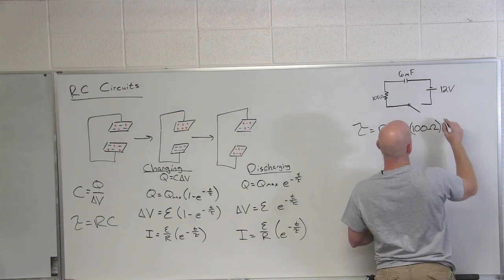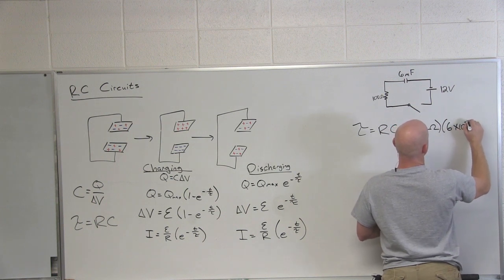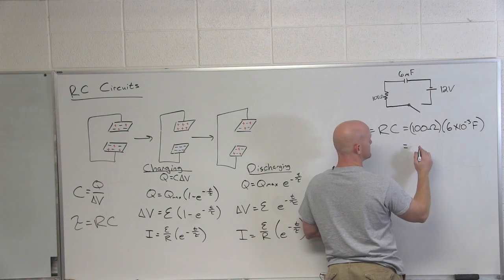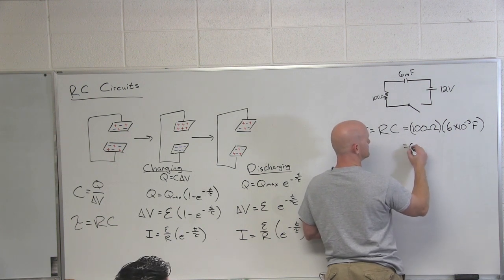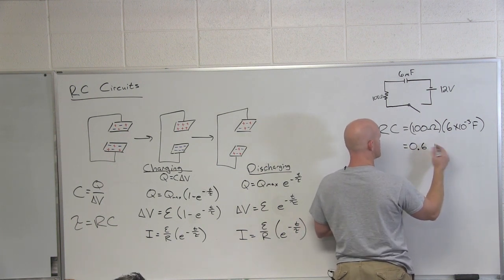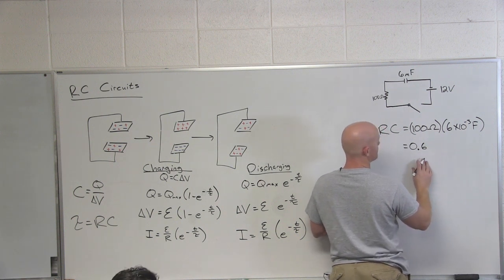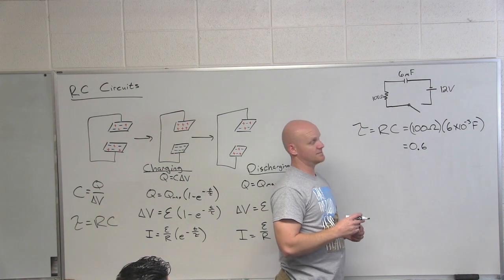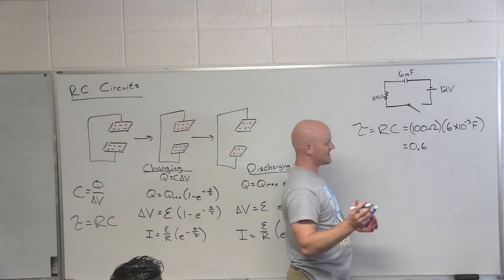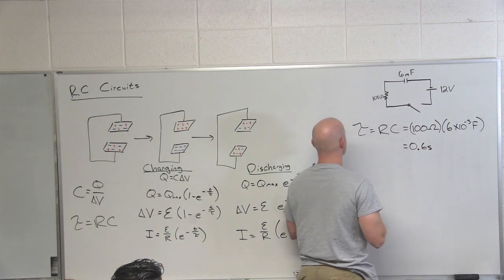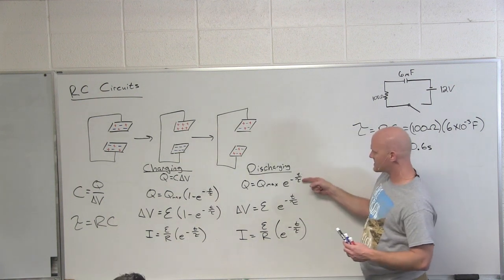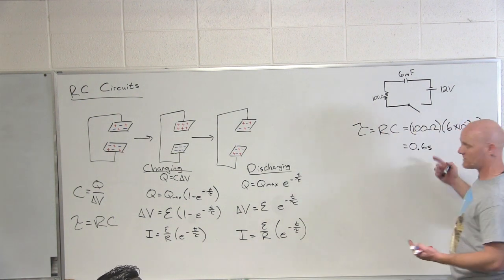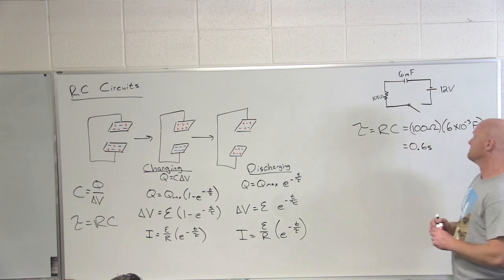So in this case first of all what is the time constant? R times C which in this case the resistor is 100 ohms, 6 times 10 to the minus 3 farads and so what do we get for a time constant here? 0.6. We'll leave the units alone for a second but it actually has to come out in seconds. So if you notice with it being T over tau they have to have the same unit so the units cancel. So it turns out this actually has units of seconds.